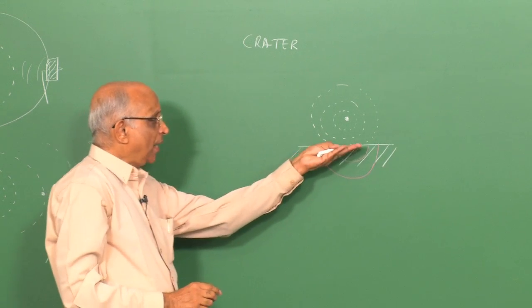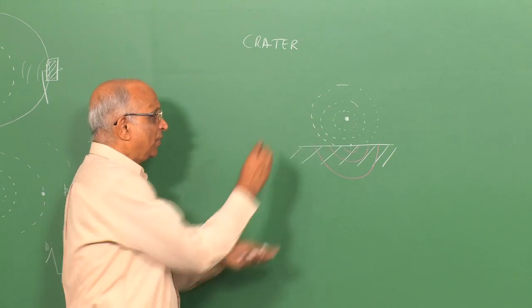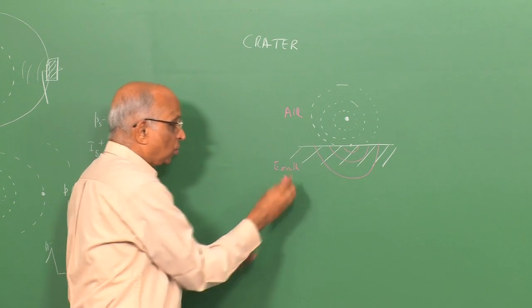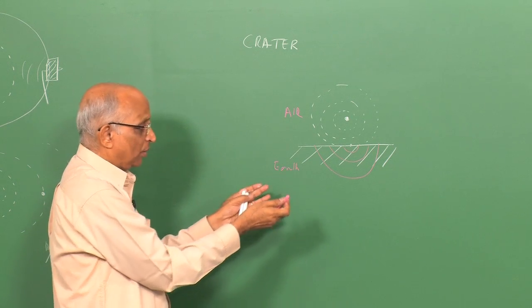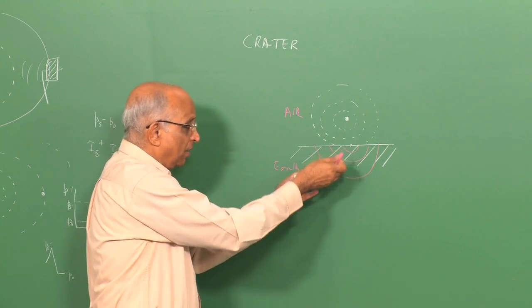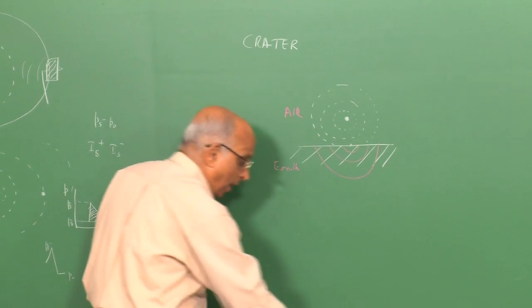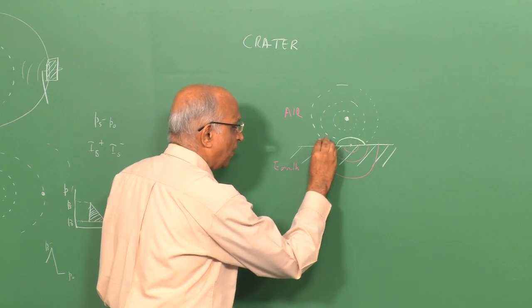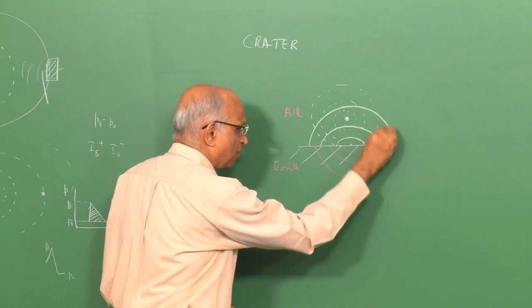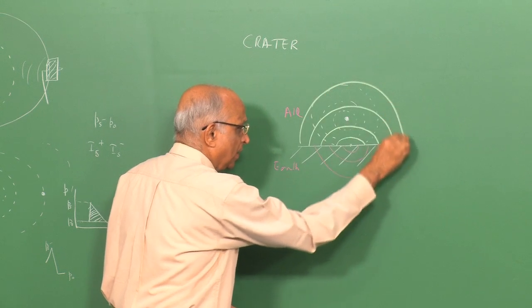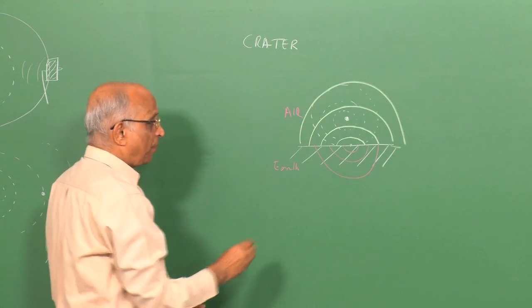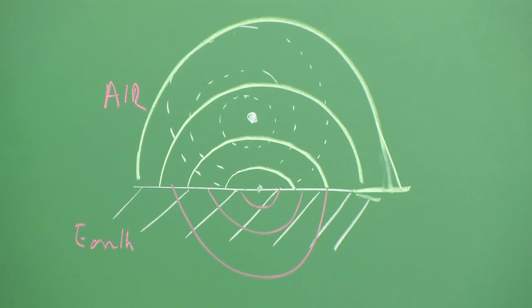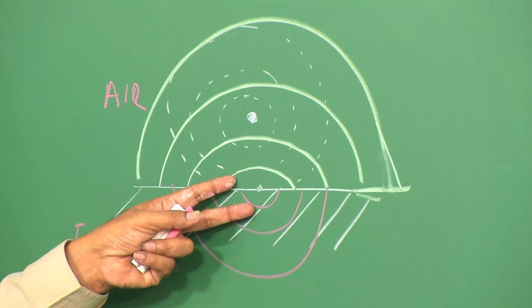Part of this wave which reaches the surface is going to be transmitted into the earth. At the surface I have air above and the earth below — which could be loose sand, rocky soil, or anything. Depending on that, some part gets reflected. So I have a reflected wave propagating out with time, giving a slightly different picture.